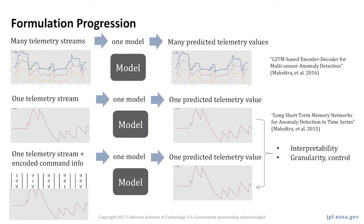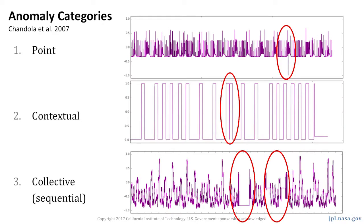Encoded command information and prior telemetry data are fed to LSTM models to learn normal channel behavior, and then the models are used to predict future values. Where those predictions deviate from true values, anomalies are flagged. This allows us to use a single algorithmic approach for thousands of telemetry channels.